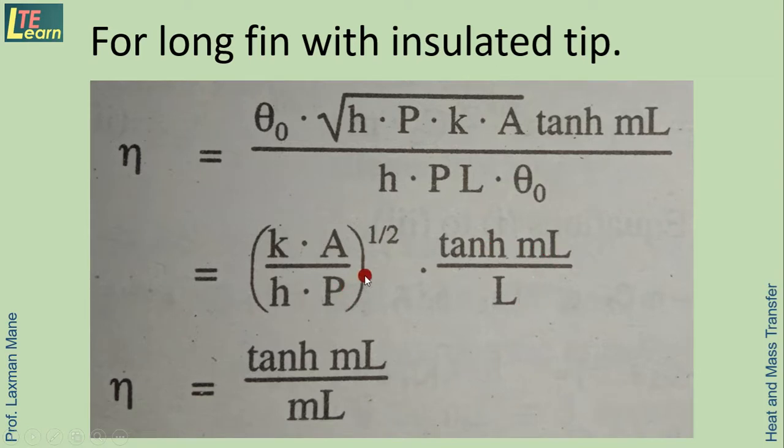Now we also have seen in the last video that square root of k·A upon h·P equals 1/m, so we can put 1 upon m here at the denominator. So η equals tanh(mL) divided by mL.